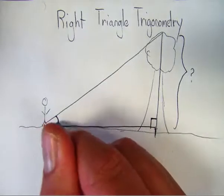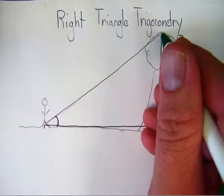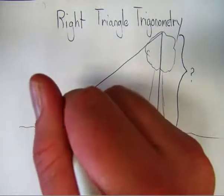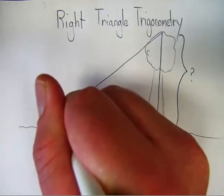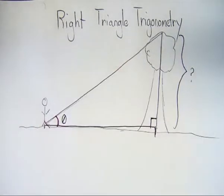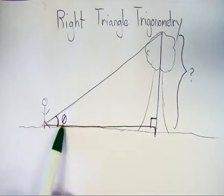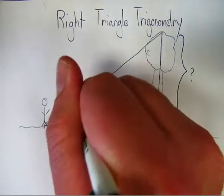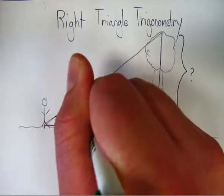All right, so this angle that this makes from the ground up to the top of the tree, we call these angles in trigonometry theta. Theta is just a Greek letter. Its symbol looks like a zero with a slash through it. So this is theta, and it's spelled t-h-e-t-a.